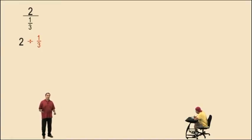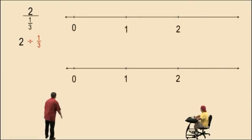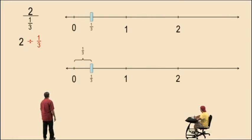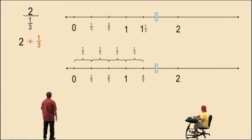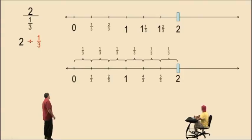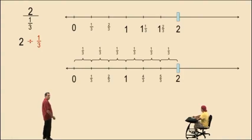Let's first visually demonstrate this calculation using a number line. We're trying to figure out how many one-thirds go into two. Here's one-third, here's two-thirds, here's three-thirds, here's four-thirds, here's five-thirds, and here's six-thirds. So how many thirds go into two, Charlie? Six! That's right, six of them!